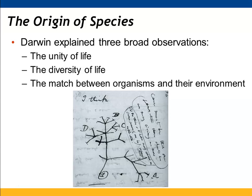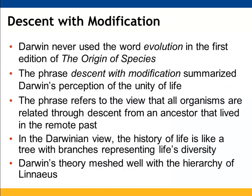Darwin's Origin of Species focused on three broad observations: the unity and diversity of life, and the connection between organisms and their environment. He did not use the word 'evolution' when he first wrote it — he used the phrase 'descent with modification,' meaning organisms are related through a common ancestor that lived in the remote past. Life's history is basically a tree with lots of branches, where each branch shows diversity while the tree as a whole shows unity. His theory meshed well with Linnaeus's hierarchy of kingdoms, phyla, and now domains.